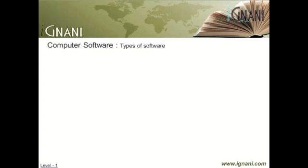Types of software. Although the distinction is arbitrary and often unclear, practical computer software can be divided into three major classes: system software, programming software, and application software.